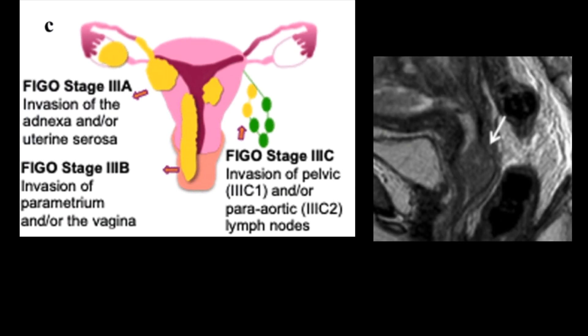Stage 3a is invasion of the adnexa and/or uterine serosa. Stage 3b is invasion of the perimetrium and/or vagina, and stage 3c is invasion of the pelvic and/or periaortic lymph nodes.